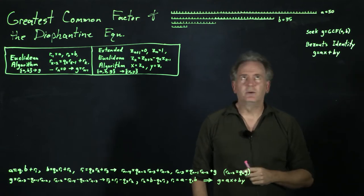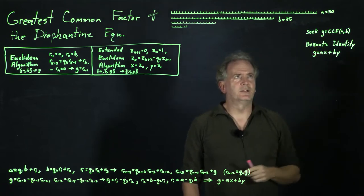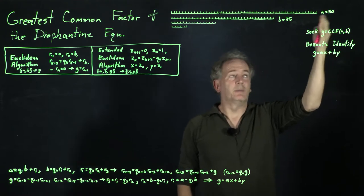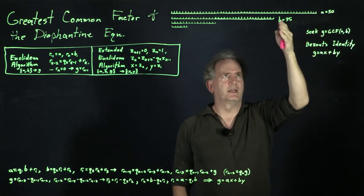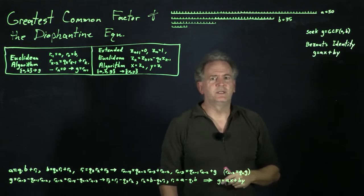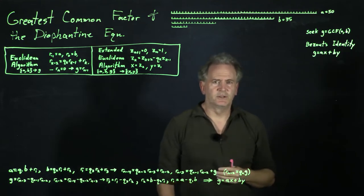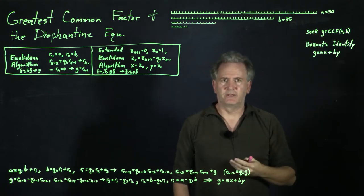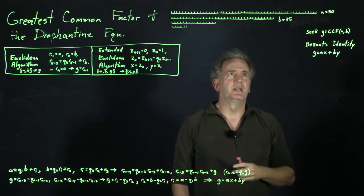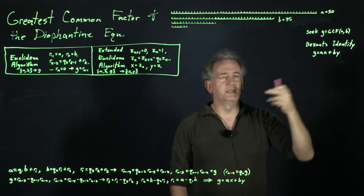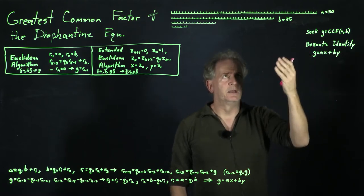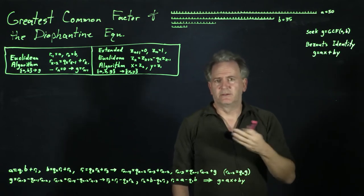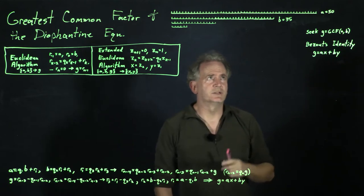The problem was first addressed by Euclid, and when considering over the integers, we can think about it in a graphic form. Say we start with a positive integer A equals 50 and another positive integer B equals 35, and we seek the largest positive integer G that can go into both A and B an integer number of times. Clearly the answer is G equals 5: 5 goes into 50 ten times, 5 goes into 35 seven times, and 7 and 10 themselves don't have any common factors.